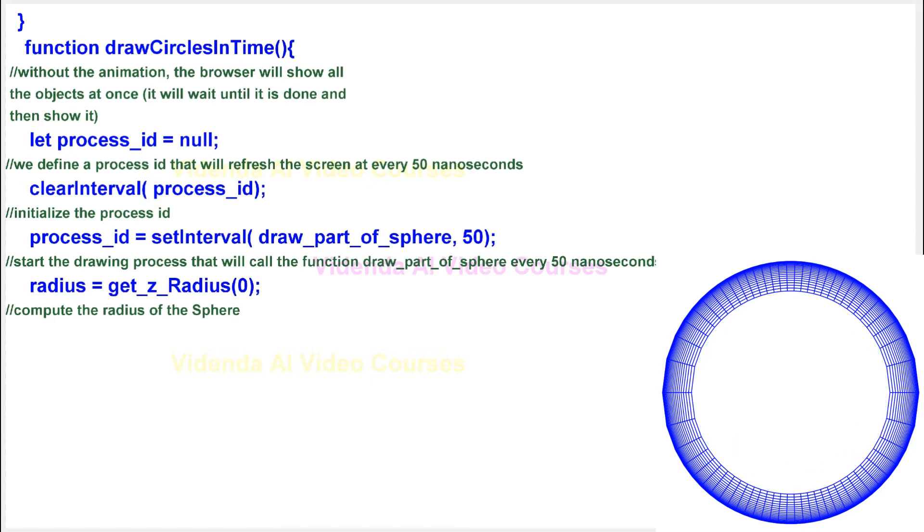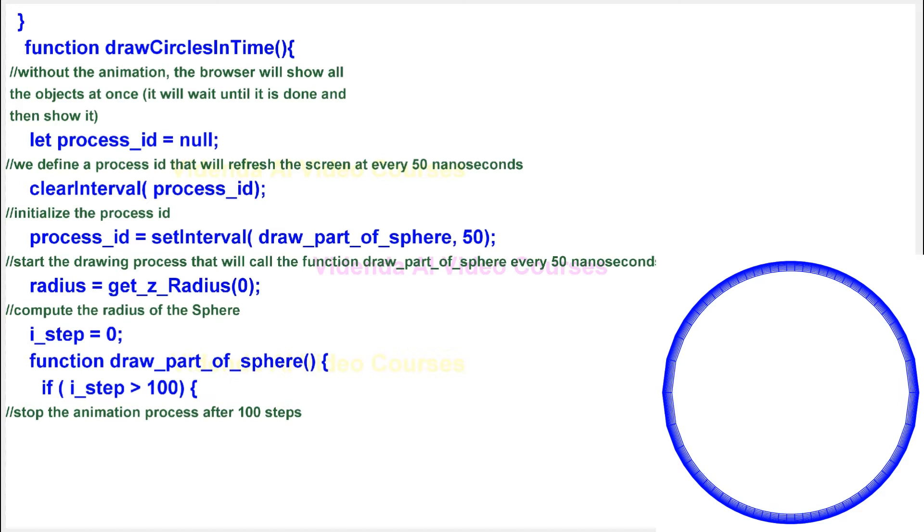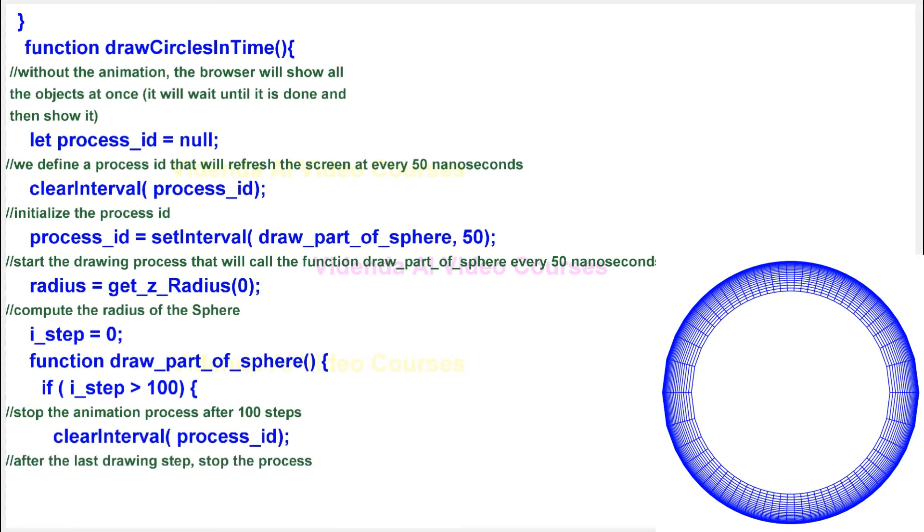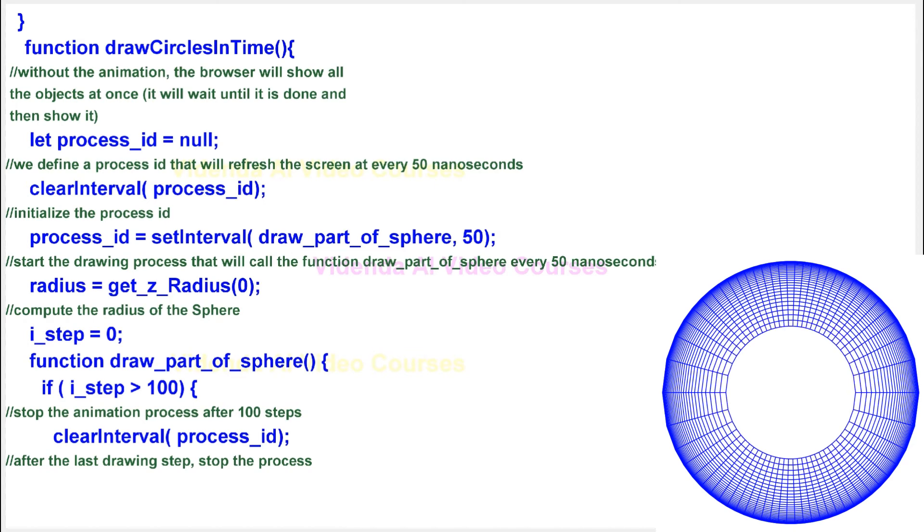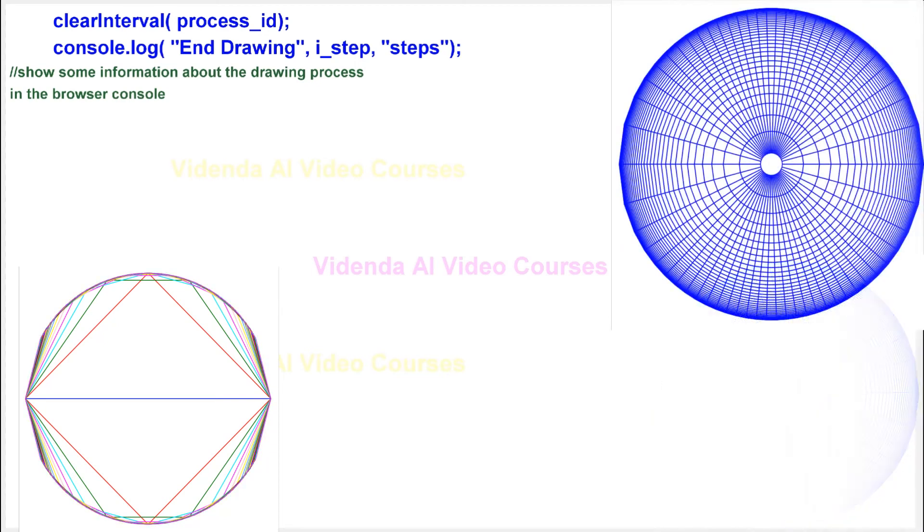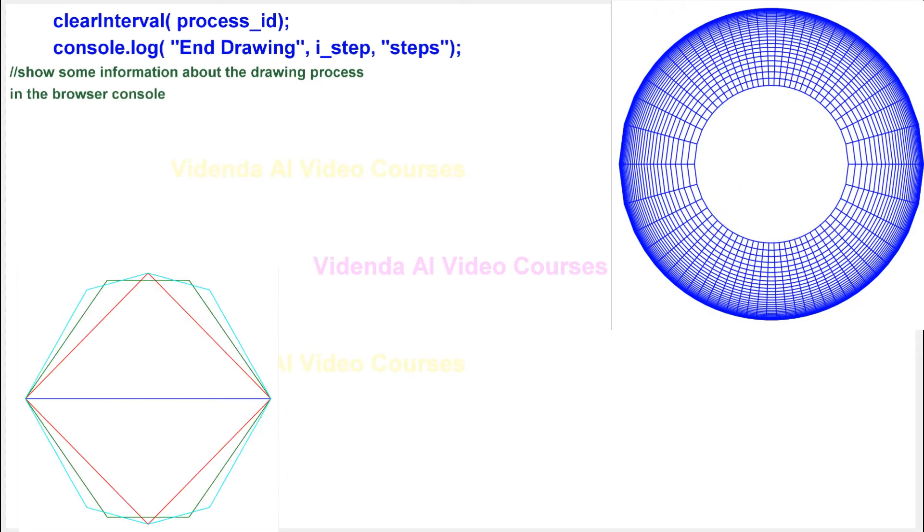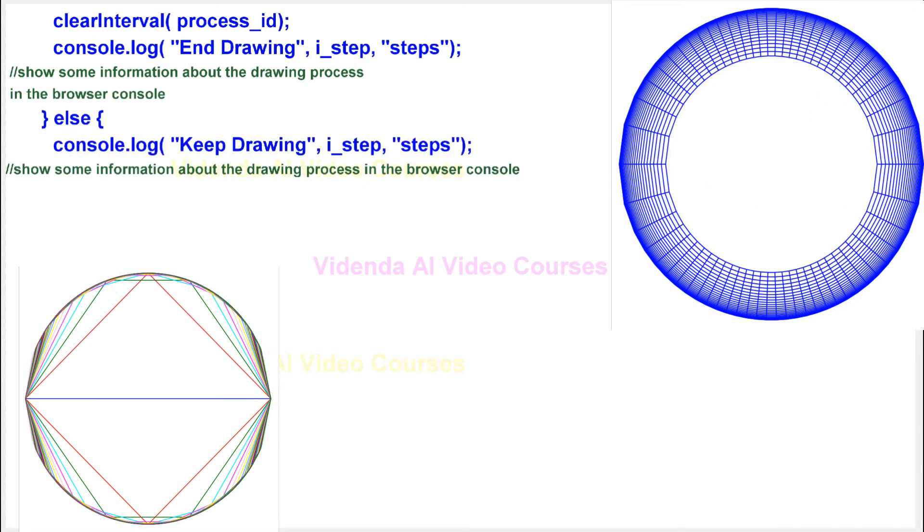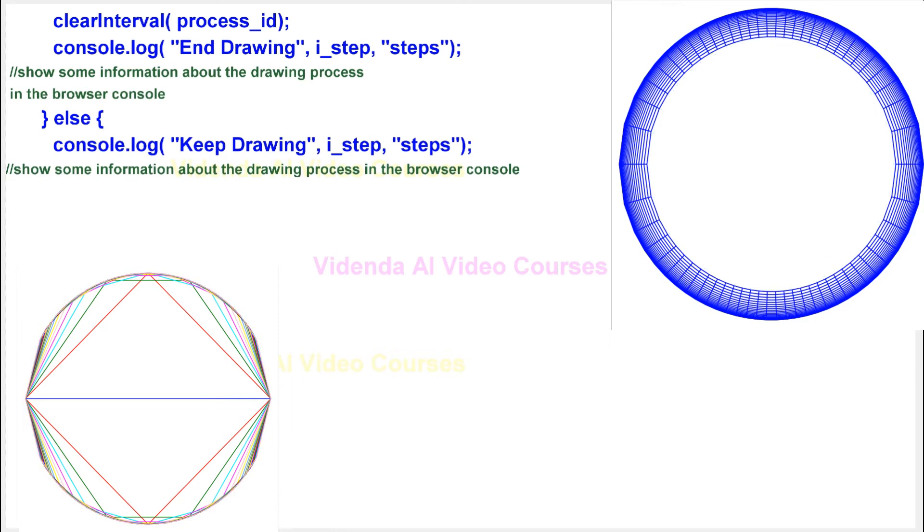Compute the radius of the sphere. Stop the animation process after 100 steps. After the last drawing step, stop the process. Show some information about the drawing process in the browser console.